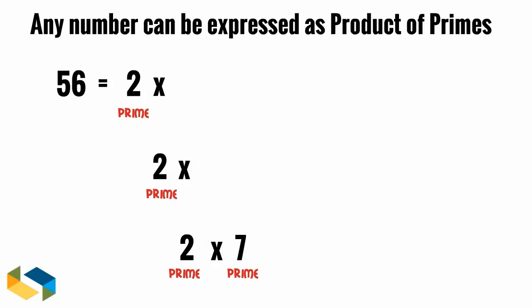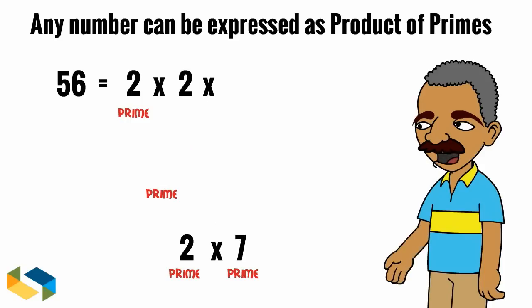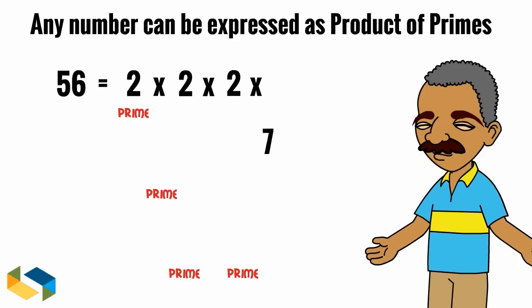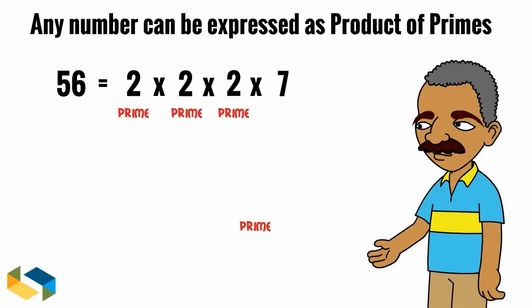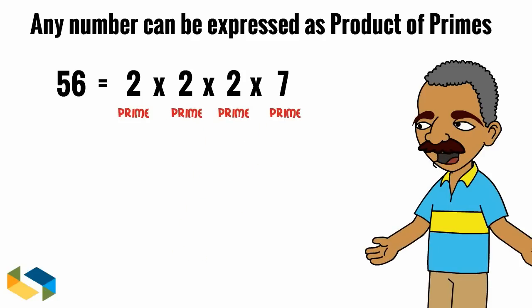As 56 can no longer be broken or factorized further, we can write it as product of its prime factors. So 56 is 2 times 2 times 2 times 7. And all of these are prime numbers.